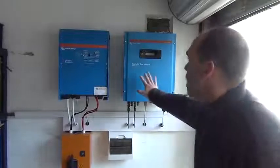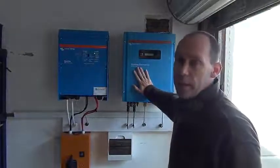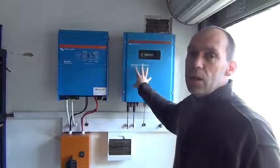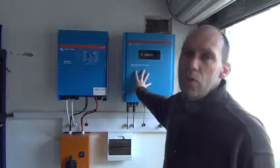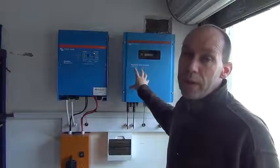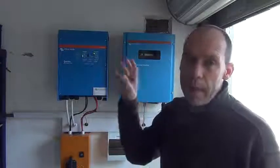Here we have the grid tie inverter. This inverter takes solar power directly from the solar panels and converts it to your mains electricity to feed your house directly or even to feed back onto the grid.